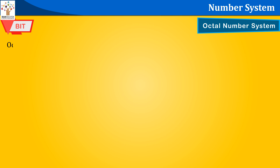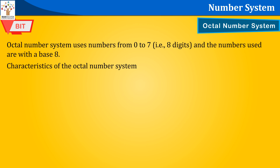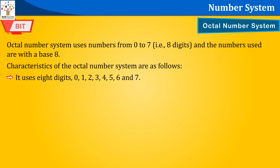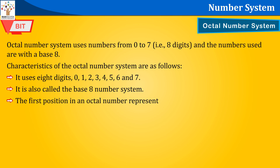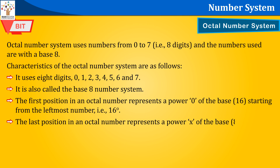The octal number system uses numbers from 0 to 7 — that is, 8 digits — and numbers are represented with a base of 8. Characteristics of the octal number system: it uses 8 digits: 0, 1, 2, 3, 4, 5, 6, and 7. It is also called the base 8 number system. The first position represents a power of 0 of the base 8, and the last position represents a power X of the base 8, where X represents the last position.